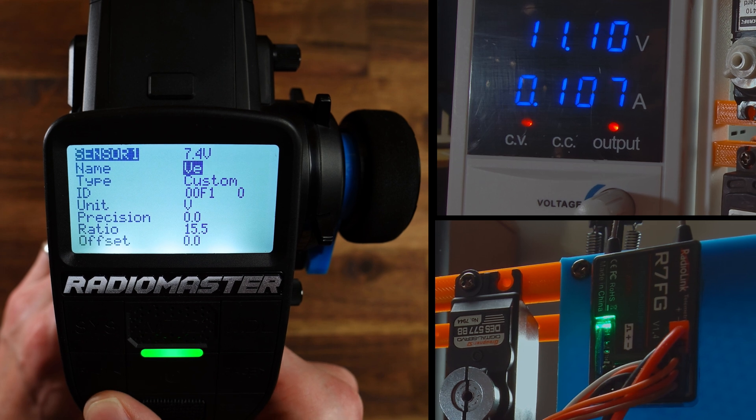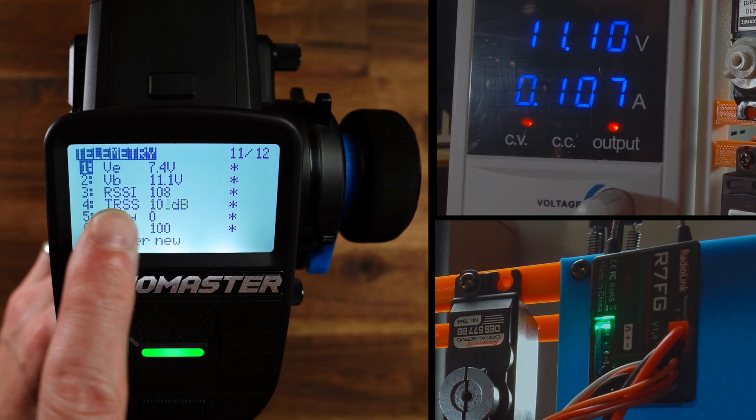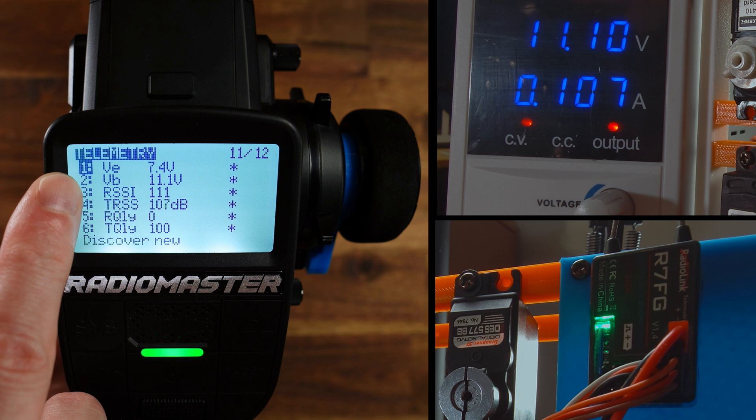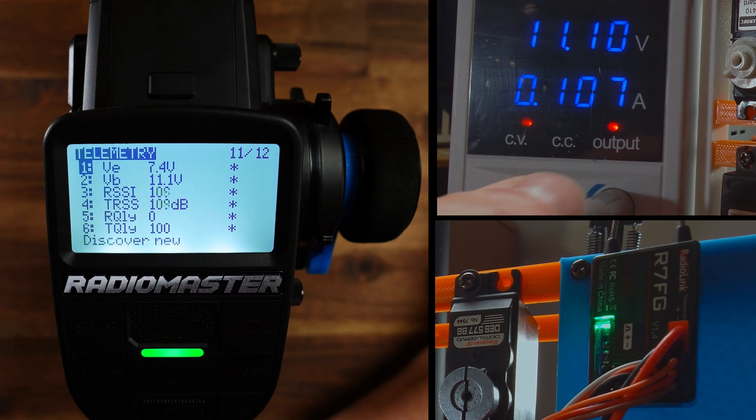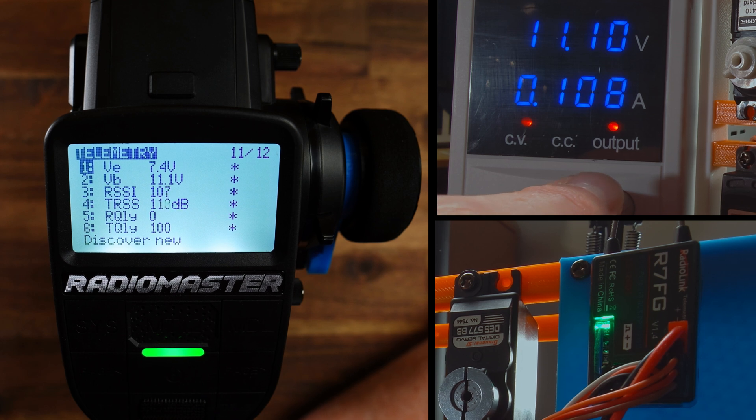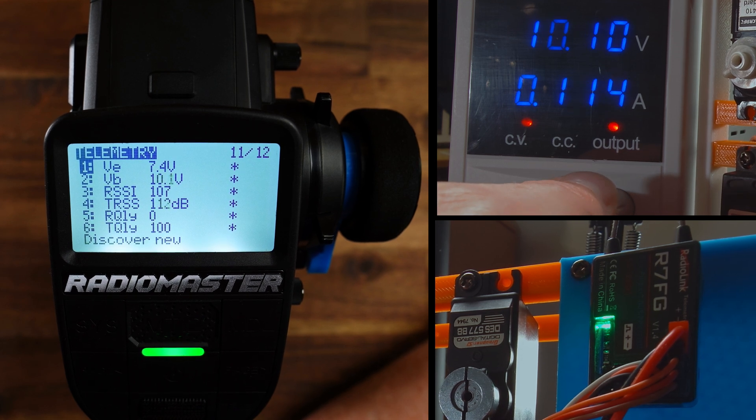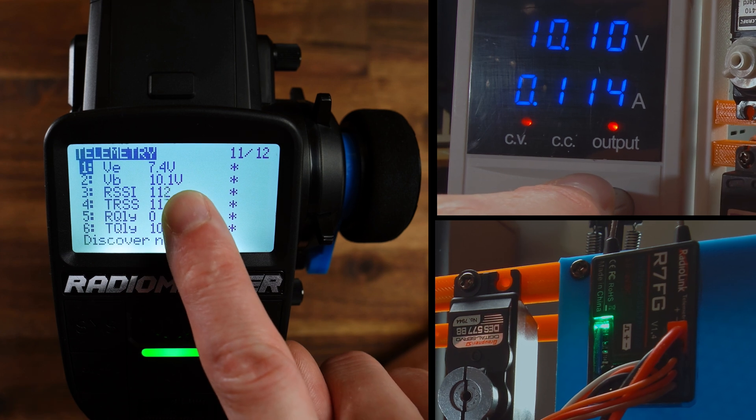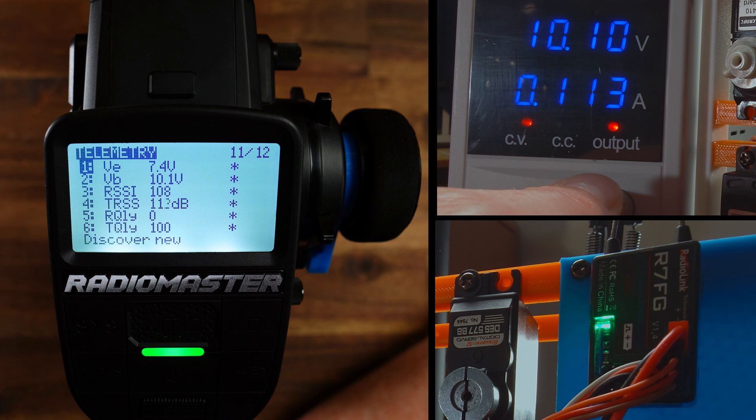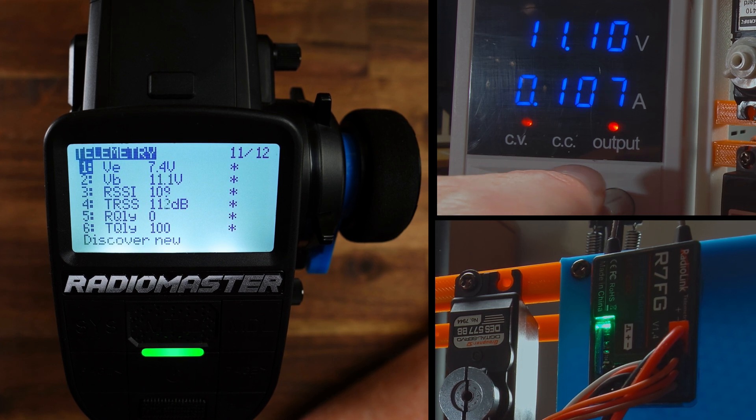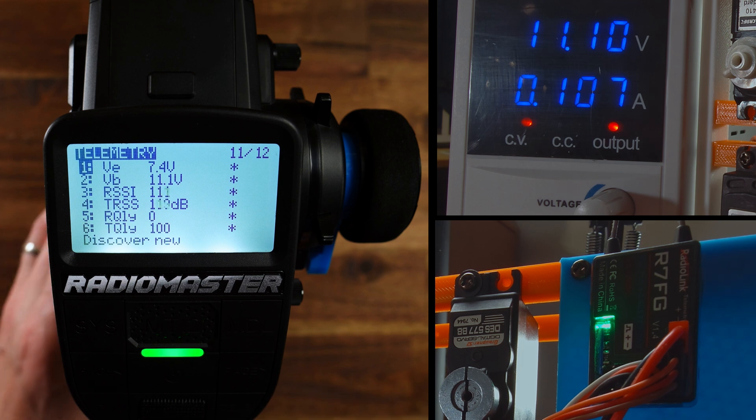Okay. Very well. Now we have 7.4 volts at sensor 1 and 11.1 volts at sensor 2. Now let me change the voltage here on the PSU. I change it from 11.1 to 10.1. And as you can see we have now 10.1 volts here on the sensor output. 9.1, 10.1, 11.1. Very well. Now we have the correct values.